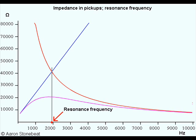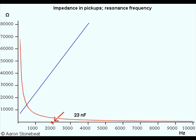And finally, let's switch back to our quality cable, but now we turn down the tone control on the guitar completely. The tone control also is a parallel capacitance. In this example, it has a value of 22 nF. So together with the system capacitance, we have 23 nF. And take a look — when the tone is completely rolled off, the resonance frequency drops to around 500 Hz.